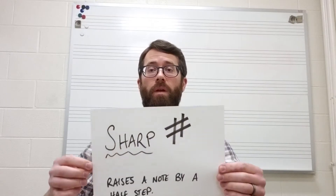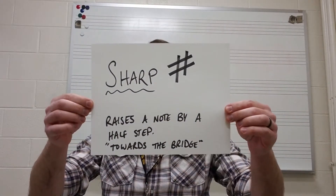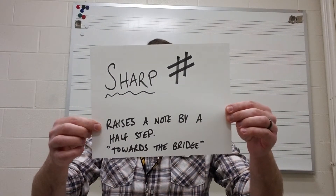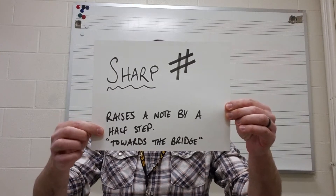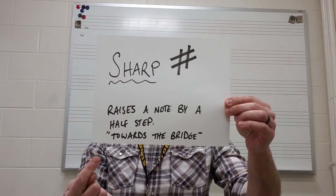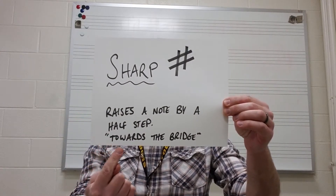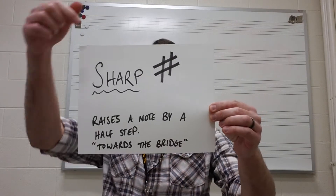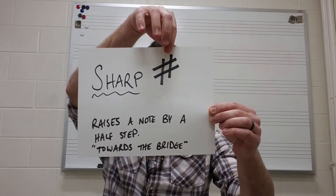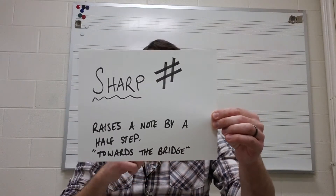So a sharp raises a note by a half step, or in other words, it moves that note towards the bridge. The symbol for a sharp looks like that.